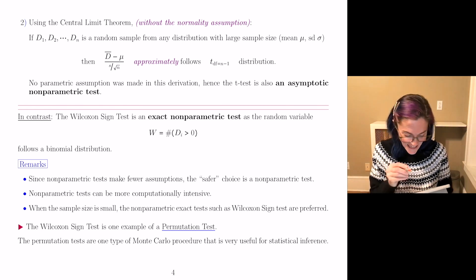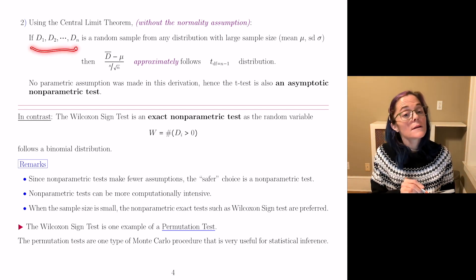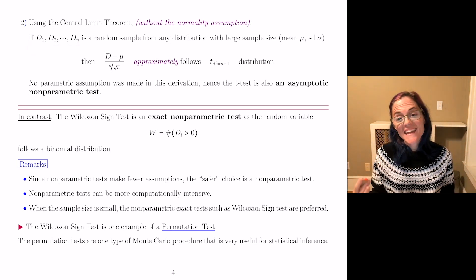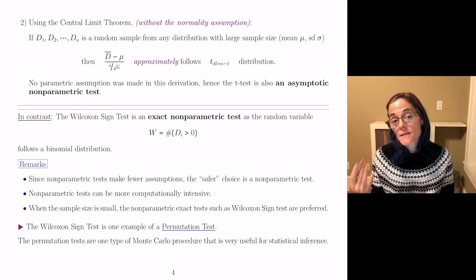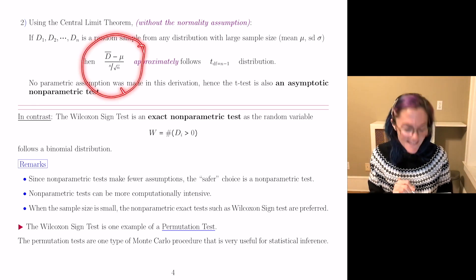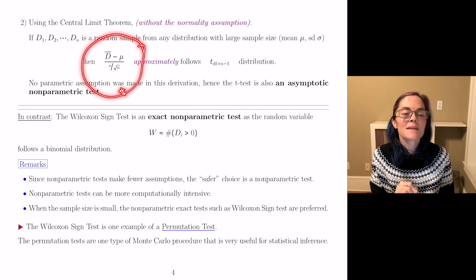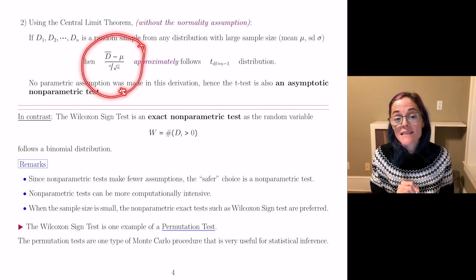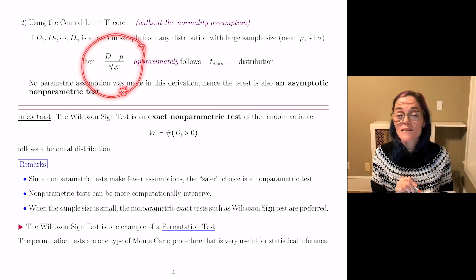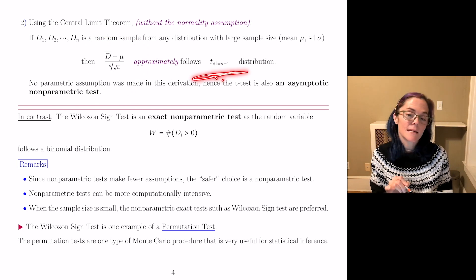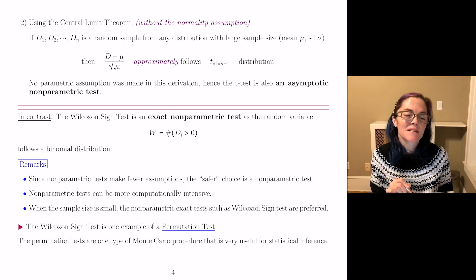And that is discussed here. So, now D₁ through Dₙ is a random sample from any distribution with large enough sample size. This, you take the sample mean minus μ divided by s over the square root of n approximately follows this t-distribution with n minus 1 degrees of freedom.